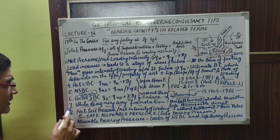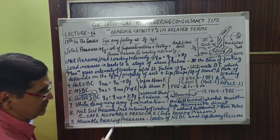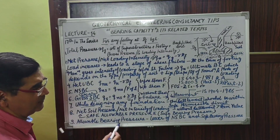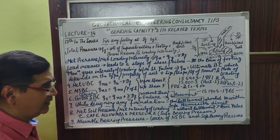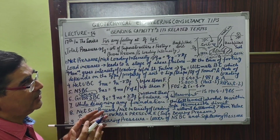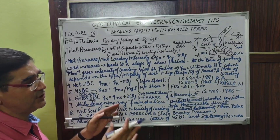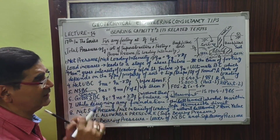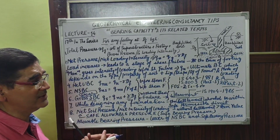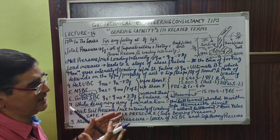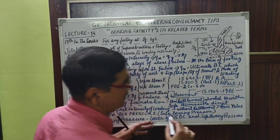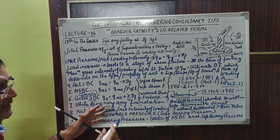So what is the net soil pressure or net intensity of loading? This can be defined as safe allowable pressure or safe bearing pressure — the pressure at which the foundation is safe from shear criteria (it will not fail in shear) and is also producing settlements within the desired limits as specified by IS-1904 or other reference codes for different kinds of structures.